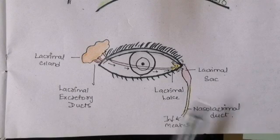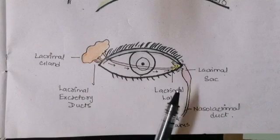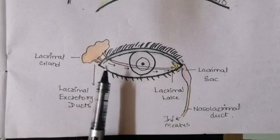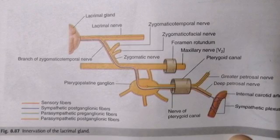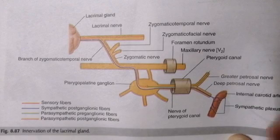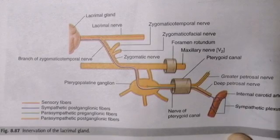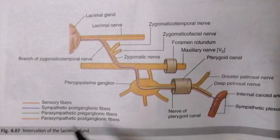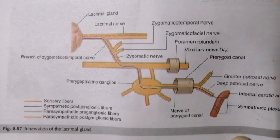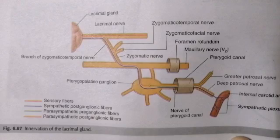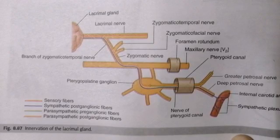Now coming to the innervation of the lacrimal apparatus, especially the lacrimal gland. The innervation of the lacrimal gland comes from three sources: sensory innervation from the ophthalmic division of the trigeminal nerve, sympathetic innervation, and parasympathetic innervation.